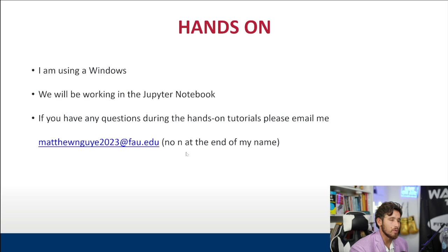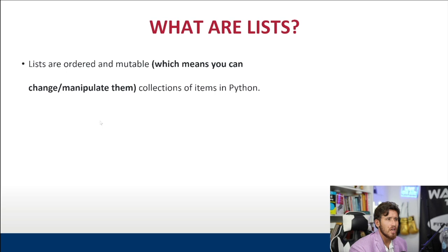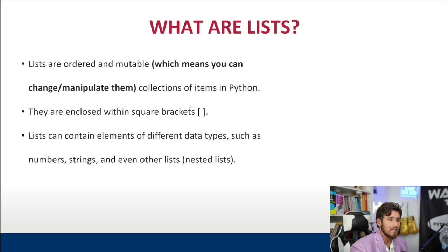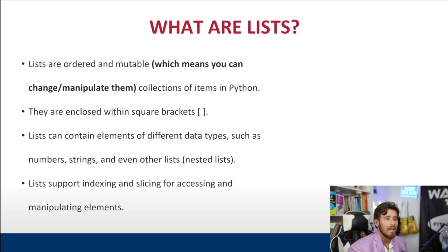So what are lists? Lists are ordered and mutable, which means that you can change and manipulate them. They're a collection of items or elements in Python, notated by square brackets. Lists can contain elements of different data types such as numbers, strings, and even other lists — you can make a list inside of a list. Lists also support indexing and slicing, which allows you to manipulate the list, add elements, remove them, and get things like the length.